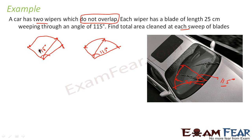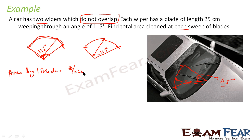If you look carefully, this is a sector — a circle with this radius moving from one position to another. The angle is 115 degrees. To find the area of one blade: area = (θ/360) × π × r², where θ = 115°, π = 22/7, and r = 25 cm.